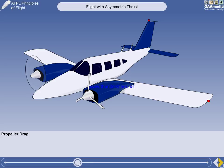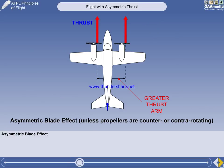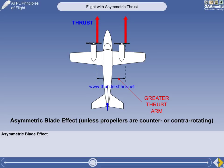If both engines rotate clockwise, the right engine has a longer thrust arm, and failure of the left engine gives a greater yaw moment. This asymmetric blade effect, or P-factor, is absent with counter-rotating and contra-rotating propellers, and, of course, on jets.